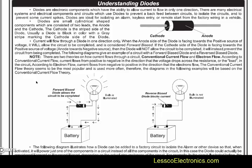Essentially, the diodes we use are 1 amp, 3 amp, 5 amp, 6 amp, and 10 amp — that's the biggest I've ever used. Beyond that, it's almost like a dead short; it doesn't really make sense to use a diode larger than 10 amps for what we want.